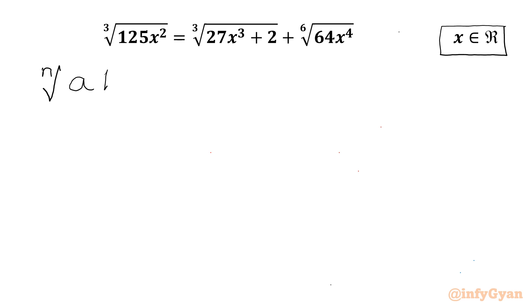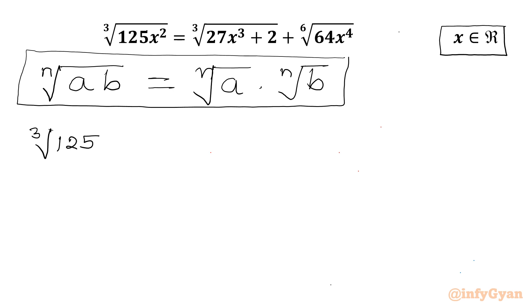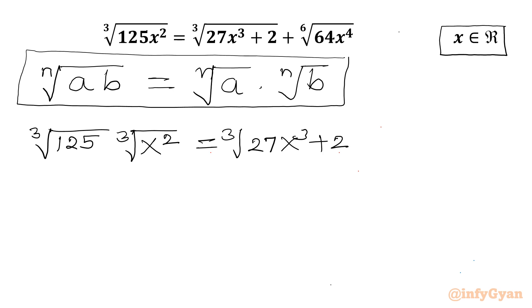The identity is: nth root of (a times b) equals nth root of a times nth root of b. Let us use this identity on our problem. So on the left hand side I will write cube root of 125 times cube root of x² equal to cube root of 27x³⁺² plus 6th root of 64 times 6th root of x⁴.